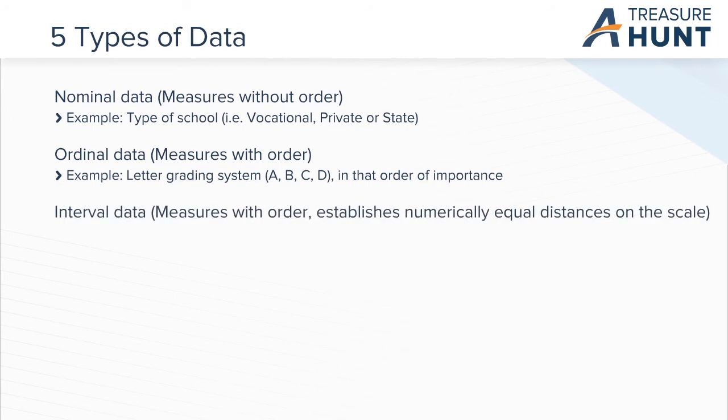Interval data measures with order and establishes numerically equal distances on the scale. For example, the performance in SAT exam is a type of interval data, where the difference between 800 and 700 is equal to the difference between 600 and 500.